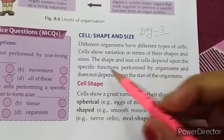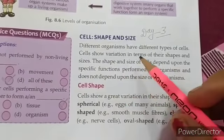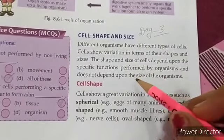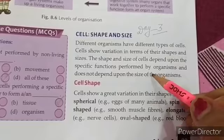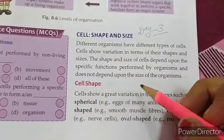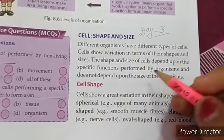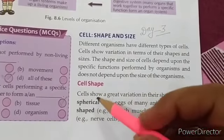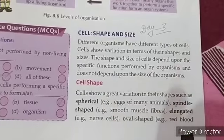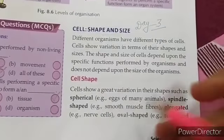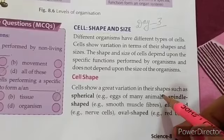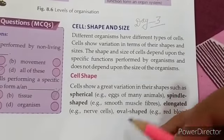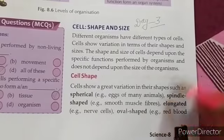The shape and size of cells depend upon the specific function. It does not depend upon the size of the organism. The size of the organism is not a determining factor — cells can be elongated or oval in shape.